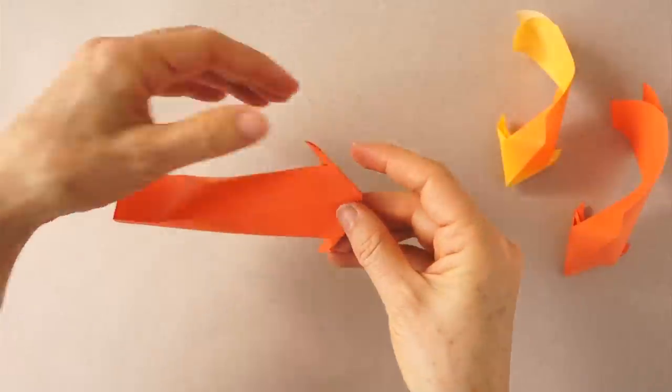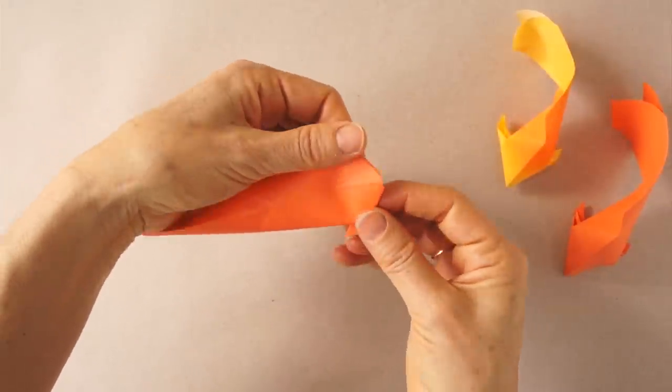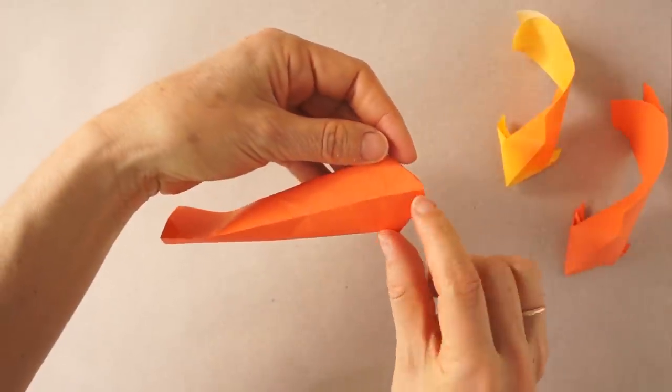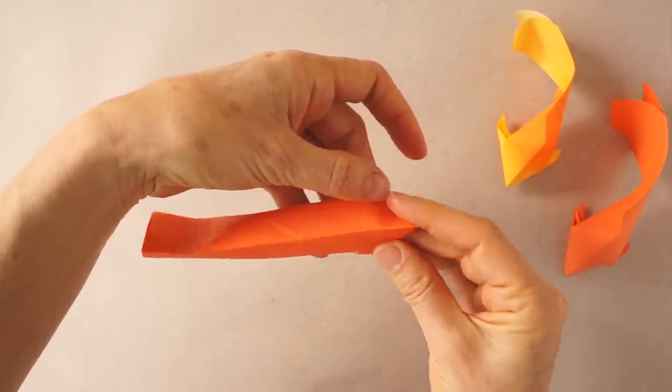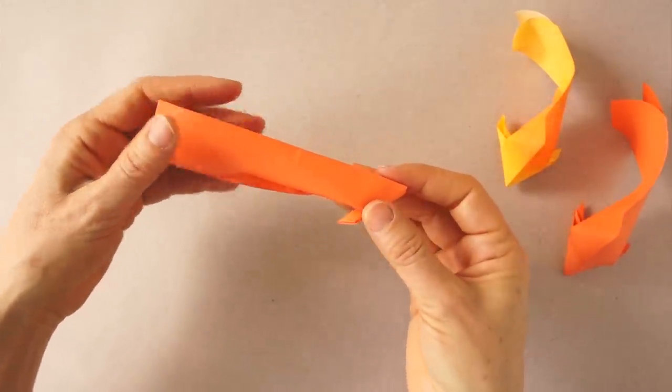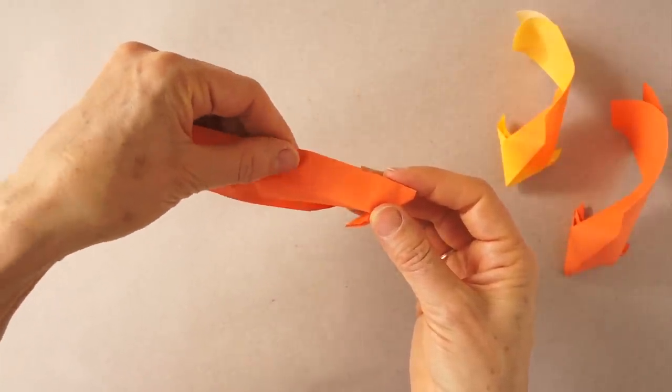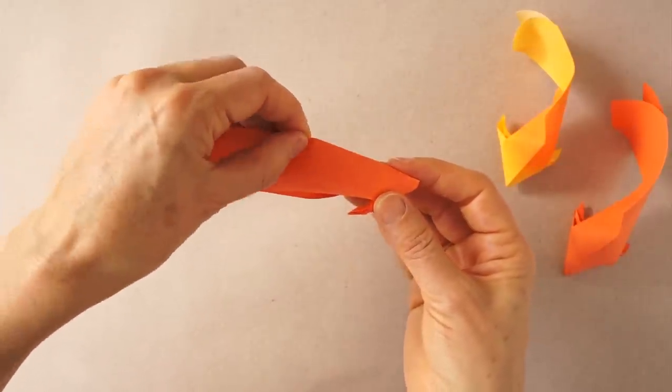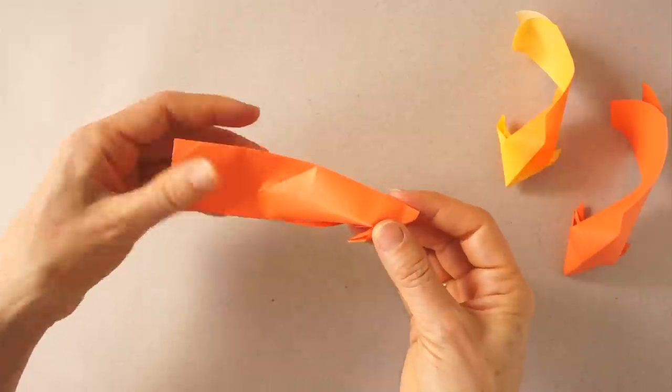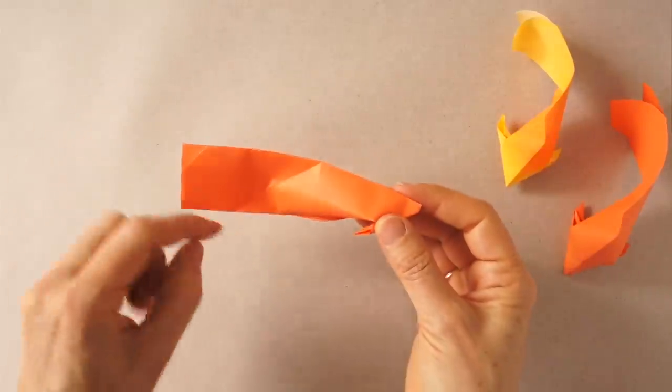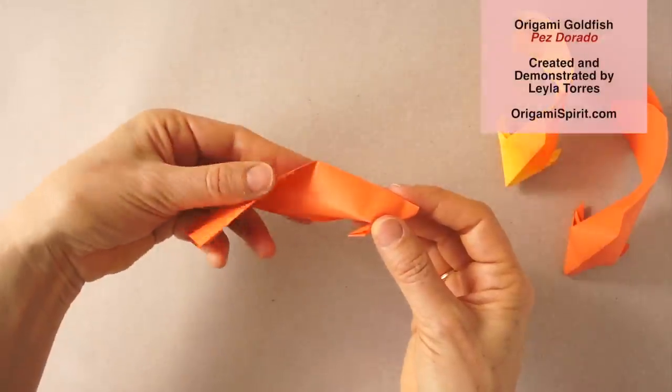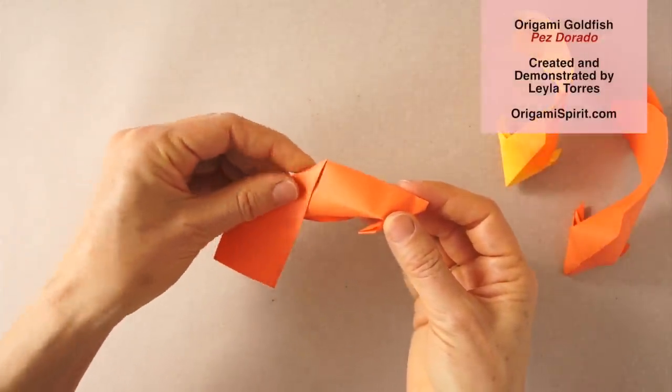We are going to fold at the center. On this side, it is a mountain fold. At this moment, we are going to flatten this. Hold the two layers together, and there is a crease that we already have there. We are going to bring this down like so.